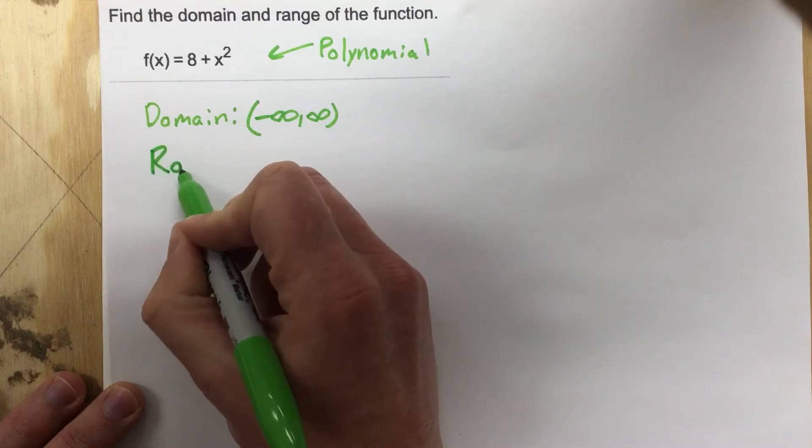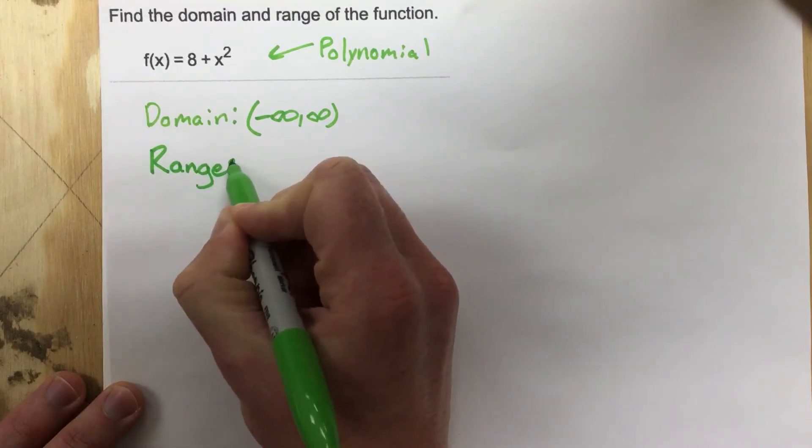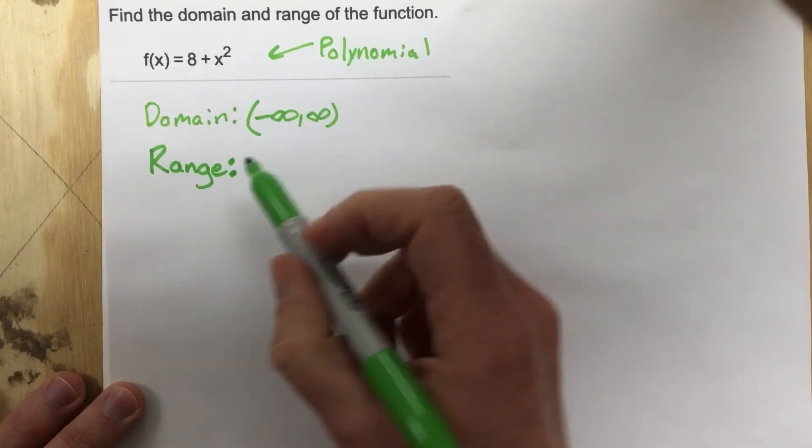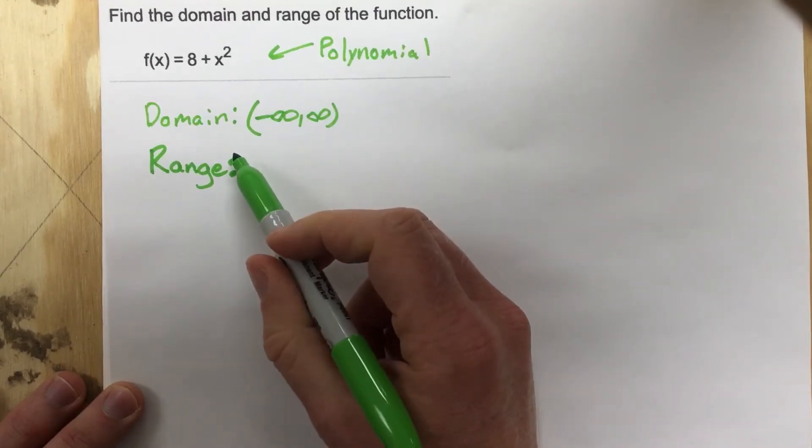For the range, the range is asking what are the outputs. So what are the possible outputs? The range is a little bit harder to identify.